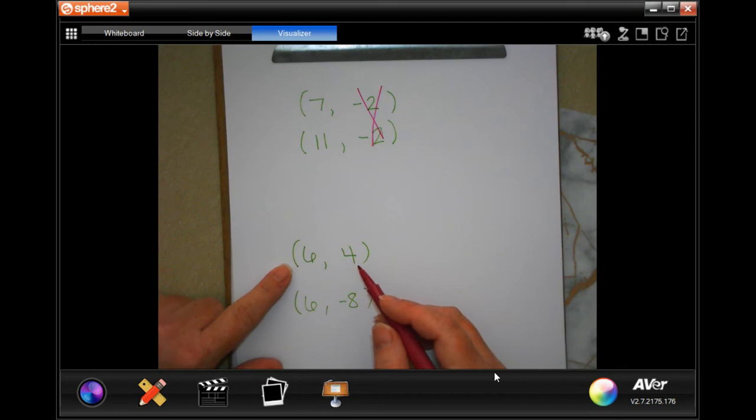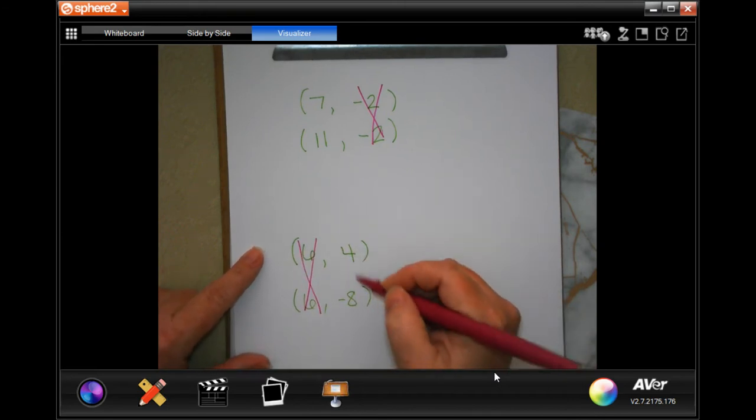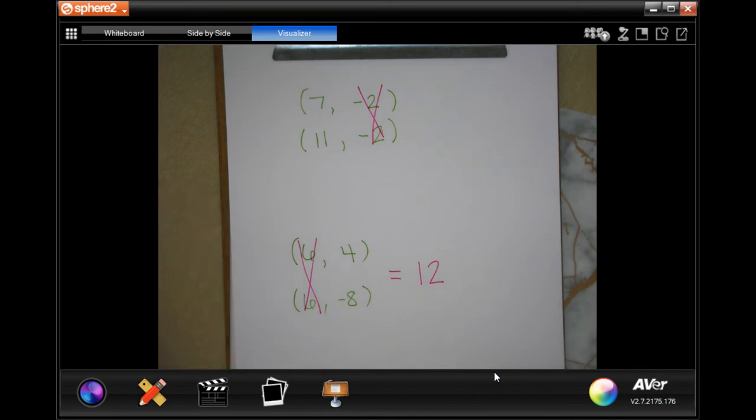Now number three: six comma four and six comma negative eight. The ones that are the same we're going to cross off. When you have a positive and a negative, you add them. So eight plus four, twelve.